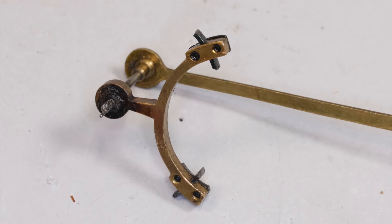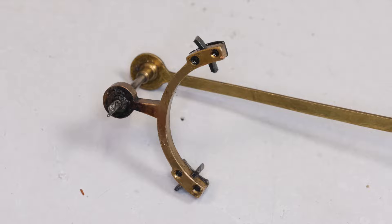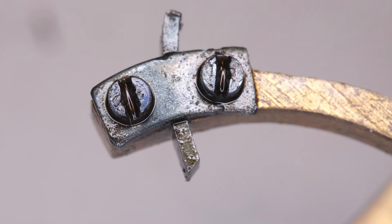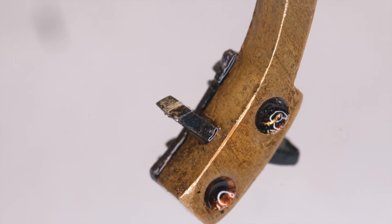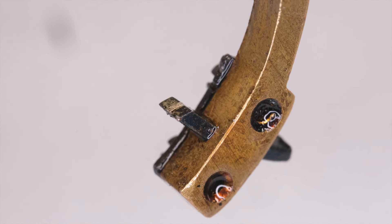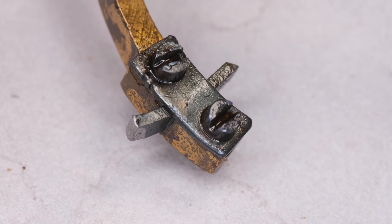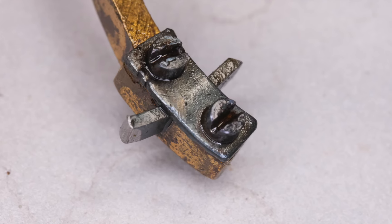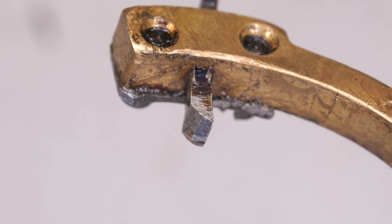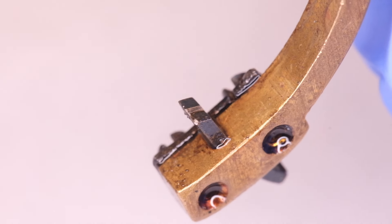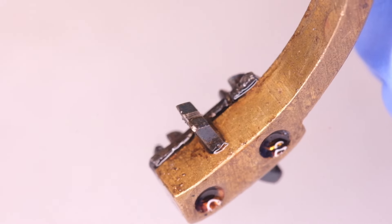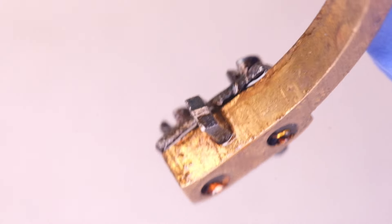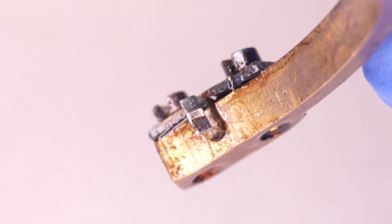The second area of interest as far as this video is concerned are the pallets themselves. So these deadbeat pallets are adjustable. They're not part of the pallet frame like some clocks, which is great because it means we can take them out and in this case replace one and we can also adjust the escapement without bending the pallet frame.